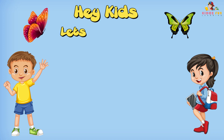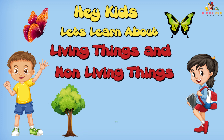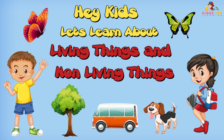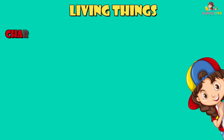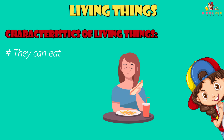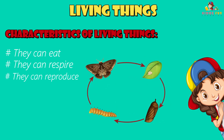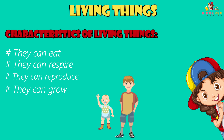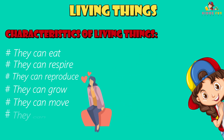Hey kids, let's learn about living things and non-living things. Living things refers to the organisms that show the characteristics of life or being alive. Some characteristics of living things are: they can eat, they can respire, they can reproduce, they can grow, they can move, they can feel.